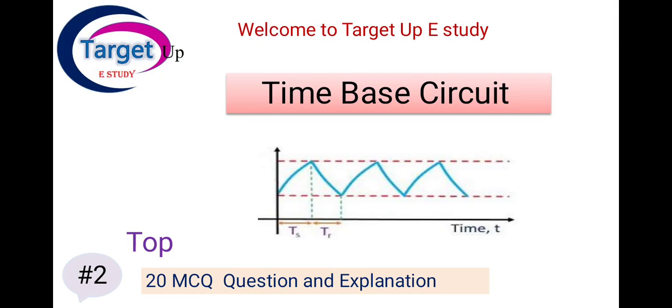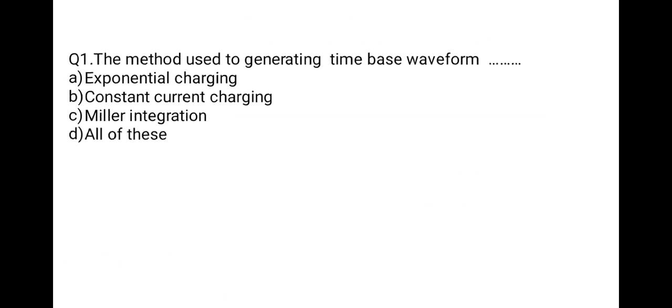Welcome students to the e-study channel. In this lecture I will complete top 20 MCQ questions with explanations on time-based circuits. This is the second series. The first question is: what is the method used to generate a time-based waveform? Options: exponentially charging, constant current charging, Miller integration, or all of these. All three are methods for generating time-based waveforms, so the correct option is D: all of these.